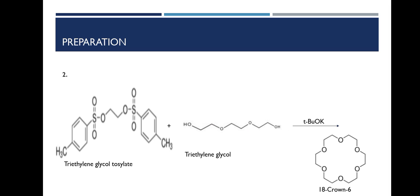Next, 18-crown-6 was prepared by the reaction of triethylene tosylate and triethylene glycol with potassium tertiary butoxide. These are the two methods for preparation of crown ethers.